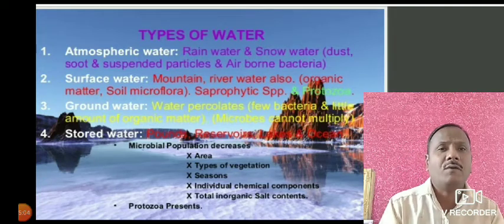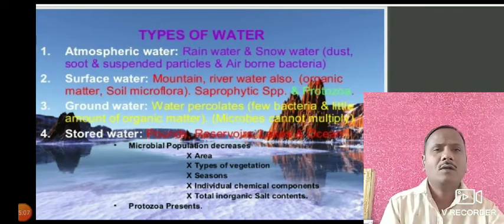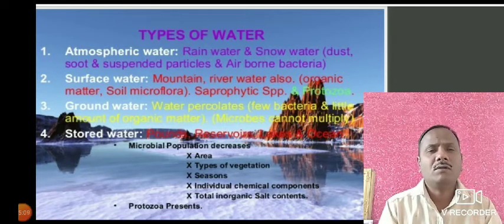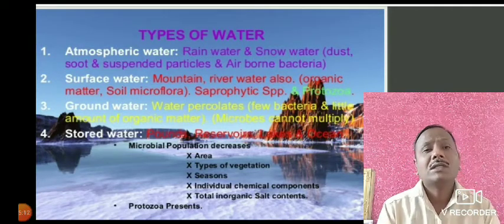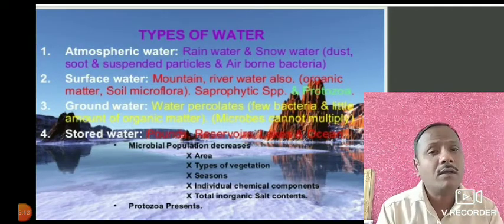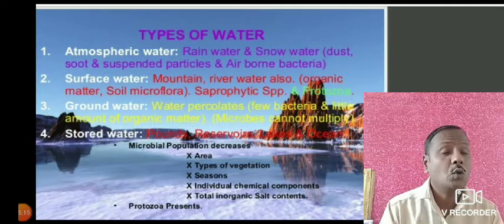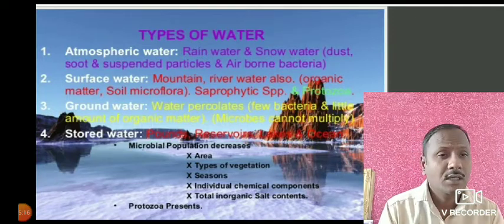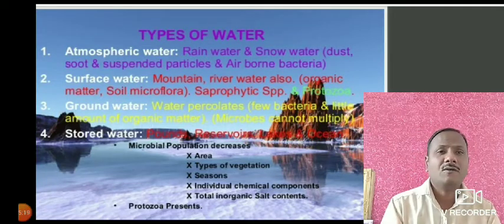On the earth and inside also, there are different types of water. There are different types of water: atmospheric water, surface water, ground water, and stored water. Let us see one by one the types of water.